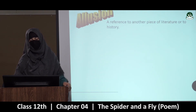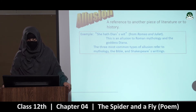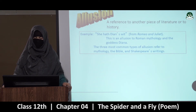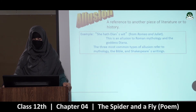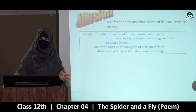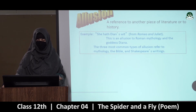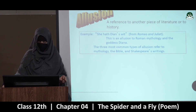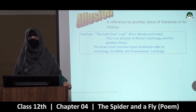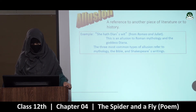Allusion — a reference to another piece of literature or to history. History ke kisi event ki taraf ya phir kisi aur piece of literature ki taraf jab ishara kiya jata hai. Example from Romeo and Juliet: 'She hath Diana's wit' — this is an allusion to Roman mythology and the goddess Diana. Diana bahut clever hua karti thi. Zyada tar Shakespeare ki writings mein bhi bataya gaya hai — zyada tar allusions jo hain woh mythology ya phir Bible ya toh phir Shakespeare's writing se hi li jati hain.